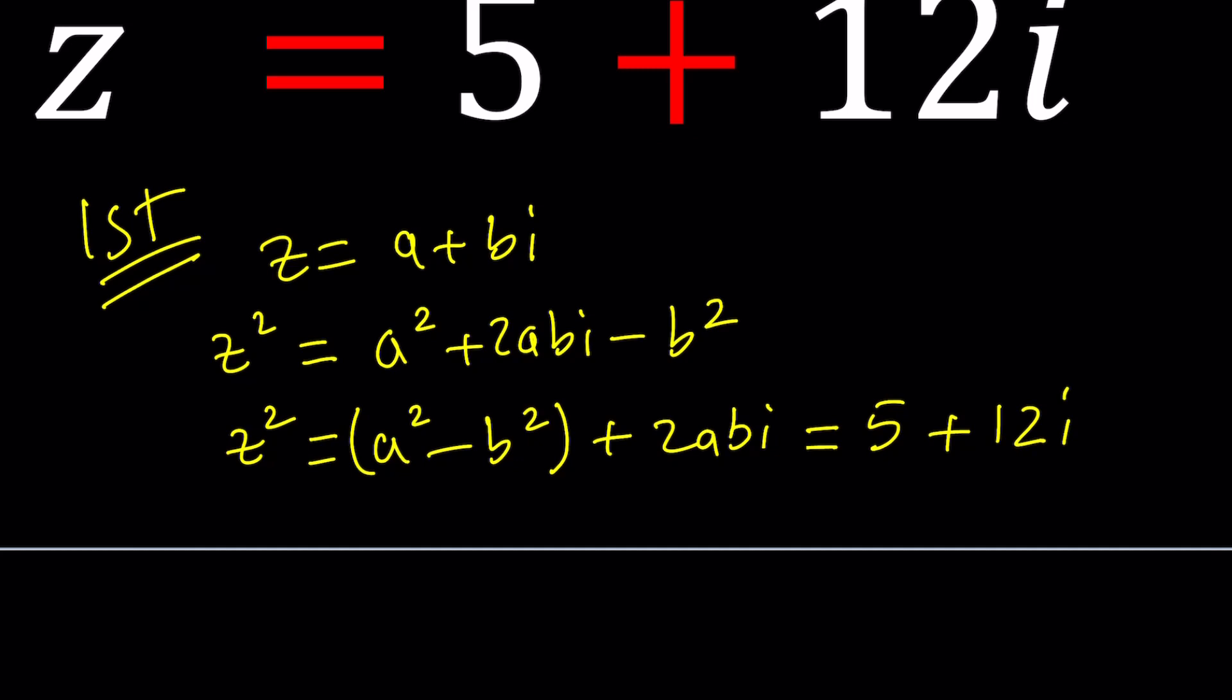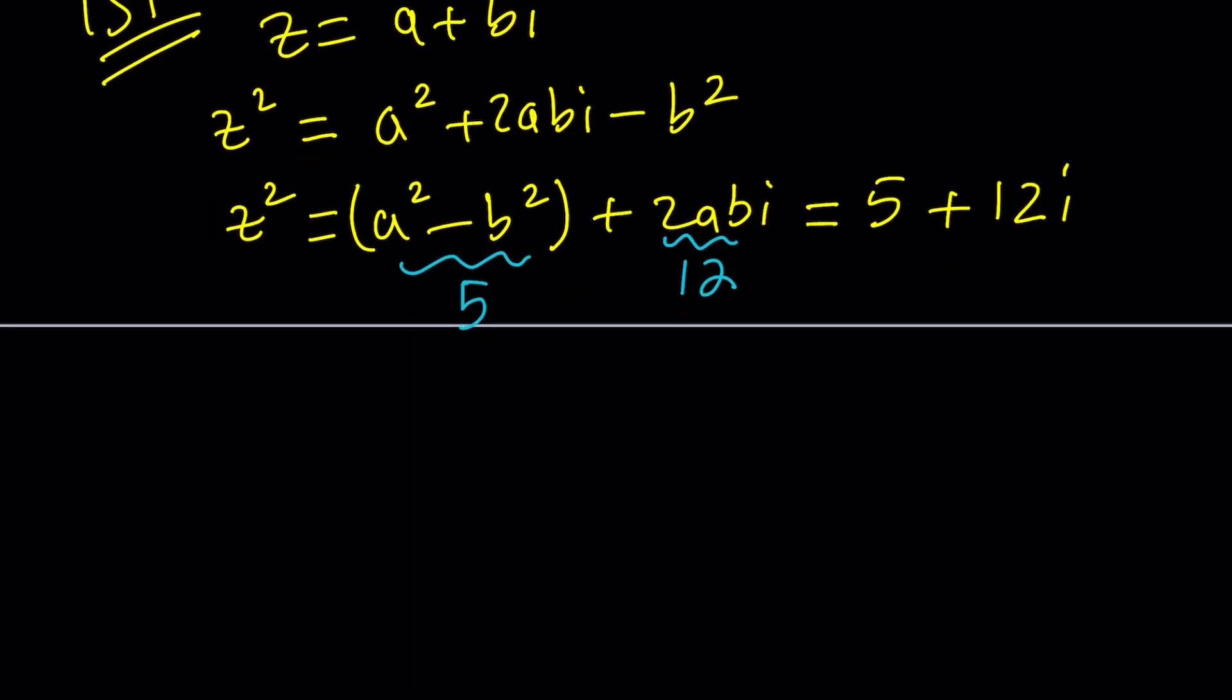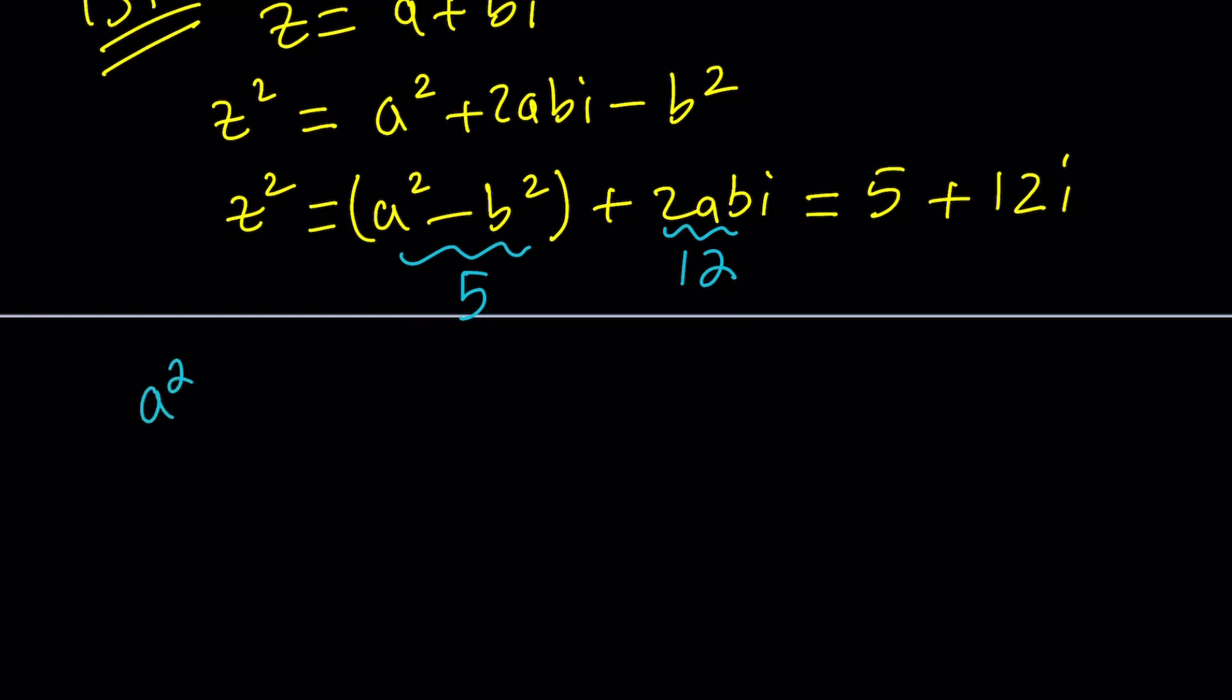Now, notice that if two complex numbers are equal, then their real parts are equal. So a squared minus b squared is supposed to be 5, and 2ab is supposed to be 12, because a and b are real numbers. So now we get a system of equations.